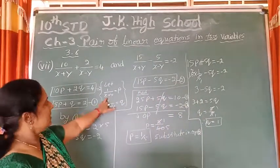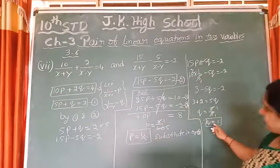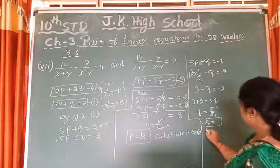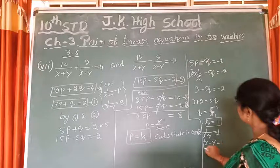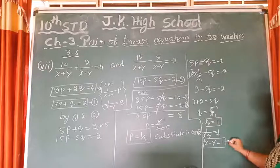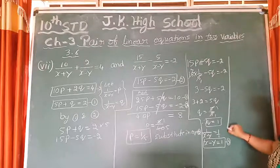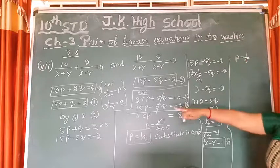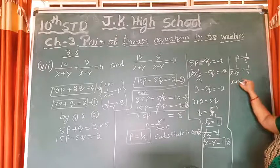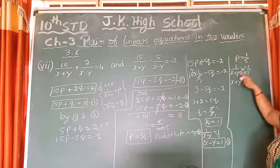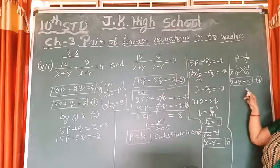Originally we let P be 1 by (x plus y) and Q be 1 by (x minus y). Substituting Q equals 1: 1 by (x minus y) is equal to 1. By cross multiplication, x minus y is equal to 1 — call this equation number 3. And substituting P equals 1 by 5: 1 by (x plus y) is equal to 1 by 5. By cross multiplication, x plus y is equal to 5 — call this equation number 4. So once again we have linear equations in 2 variables.